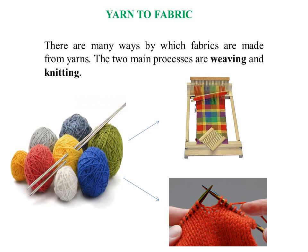Next, we come to yarn to fabric. There are many ways by which fabrics are made from yarns — mainly two processes: weaving and knitting. You can see in the picture different colors of yarns being weaved on a loom, which is weaving, and on the lower side is knitting of a sweater using a single yarn.